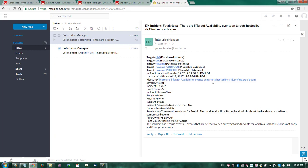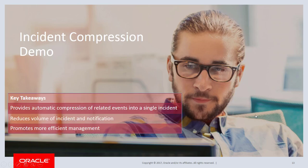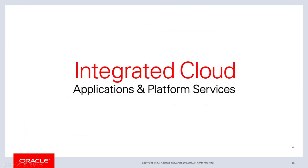The compression feature in Enterprise Manager 13c provides automatic compression of multiple events into a single incident, which reduces the volume of both incidents and notifications. As a result, it promotes more efficiency in your system management. For more information, online documentation is available from the URL shown on this screen. There is also a MOS note that provides step-by-step instructions describing how to configure a rule set to create one compressed incident and to notify the administrator via email. This is the end of the recording of the Intelligent Incident Compression presentation. Thank you for watching.